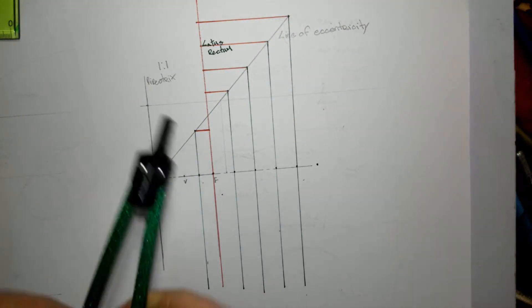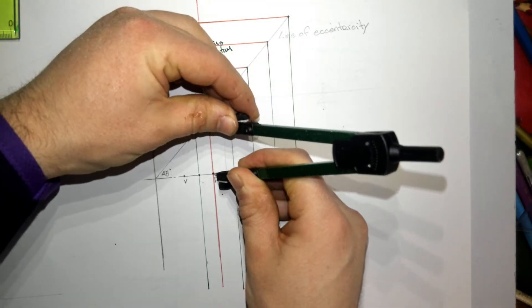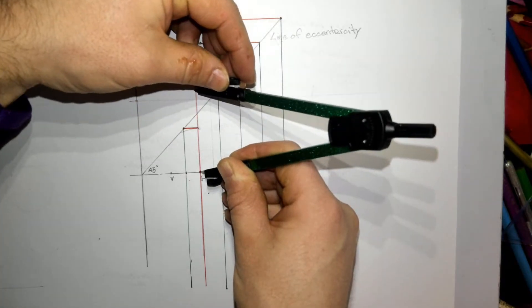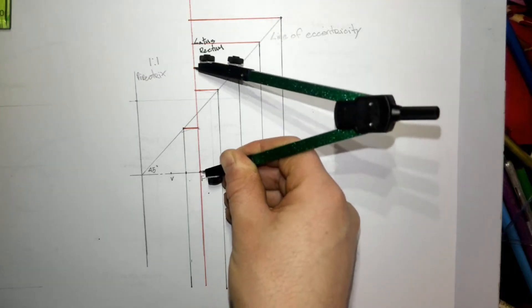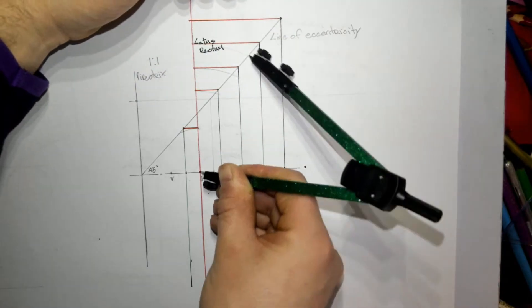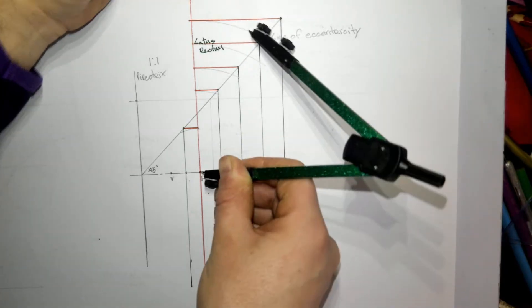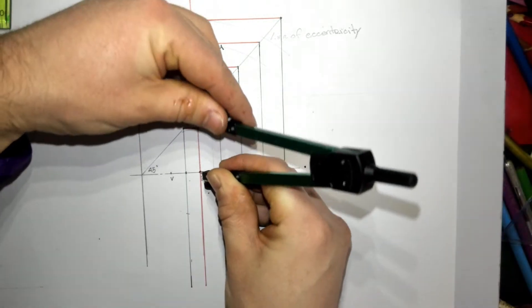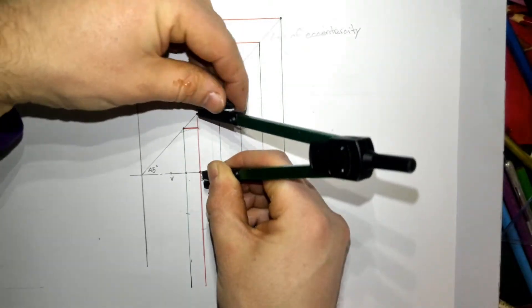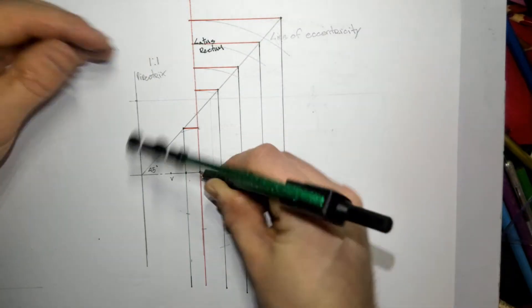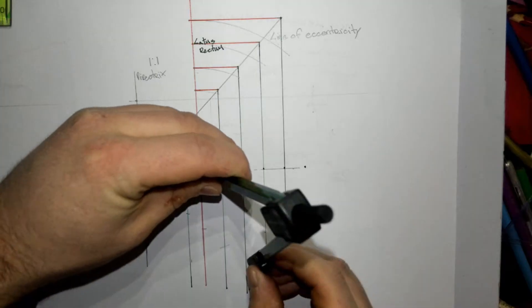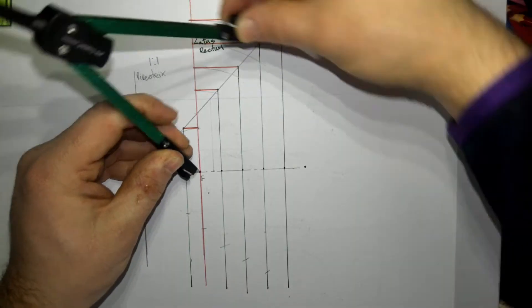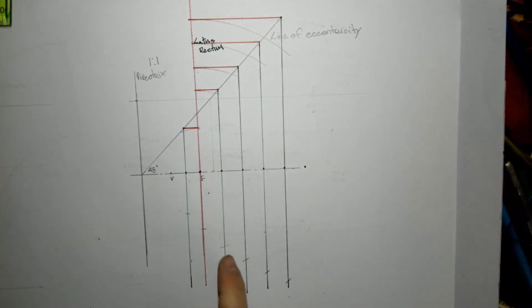Now I'm going to take my compass, put my compass on F, bring the nib to the horizontal lines, and swing back to the vertical lines they came from. And then I can do the bottom ones as well by simply swinging down to the bottom. Where the latus rectum intersects the line of eccentricity is always a point on any conic section. Now I'm going to mark up freehand and sketch them in.